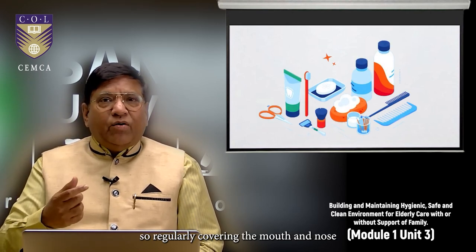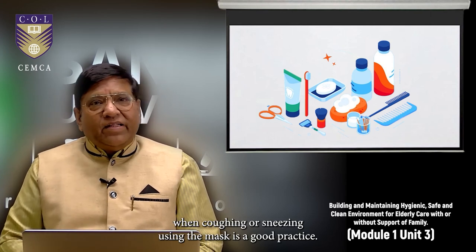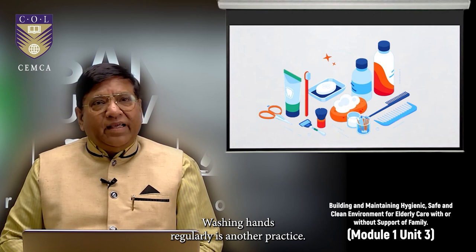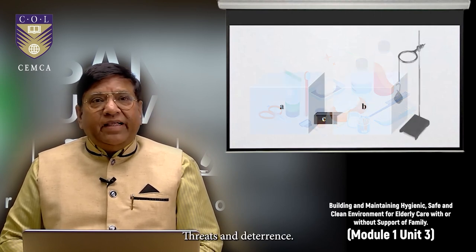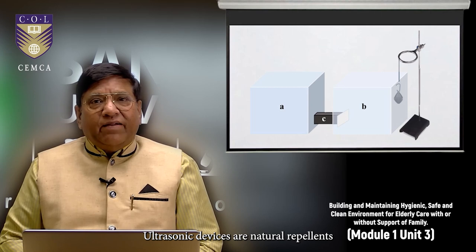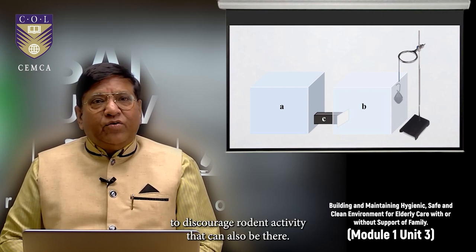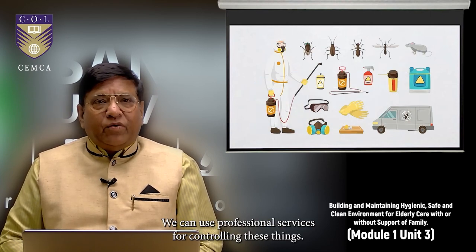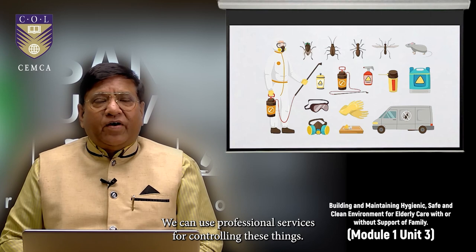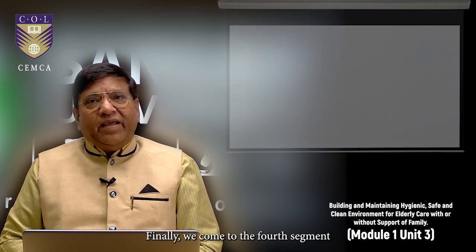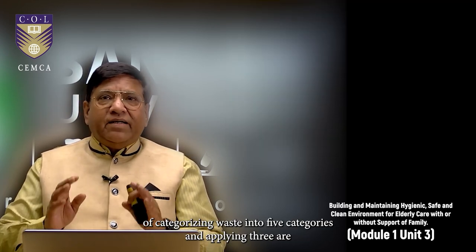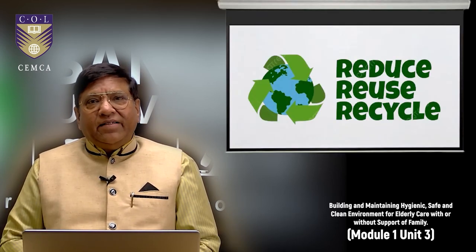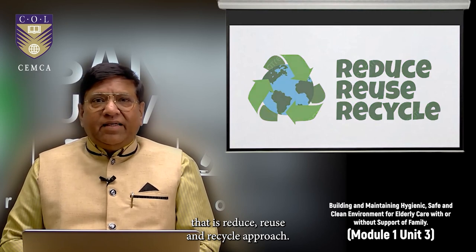Regularly covering the mouth and nose when coughing or sneezing. Using the mask is a good practice. Washing hands regularly is another practice. Traps and deterrents. Ultrasonic devices or natural repellents to discourage rodent activity. That can also be there. Professional pest control. We can use professional services for controlling these things. Finally, we come to the fourth segment of categorizing waste into five categories and applying 3R, that is reduce, reuse and recycle approach.